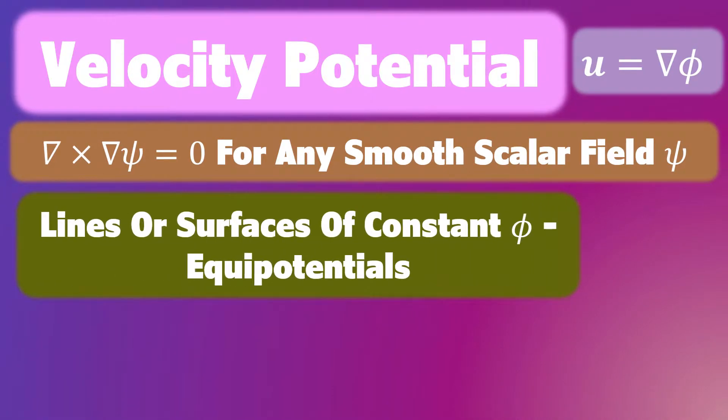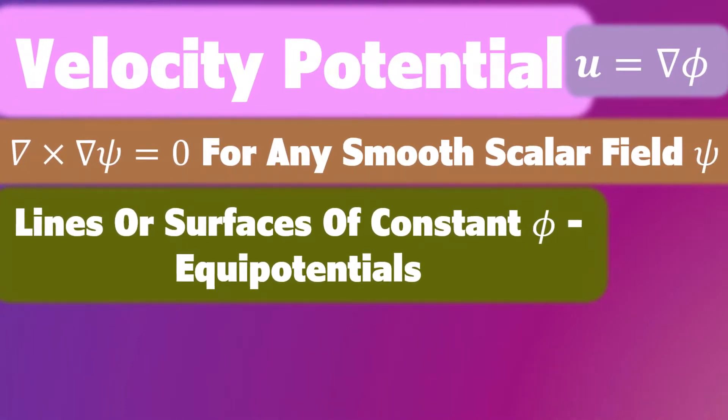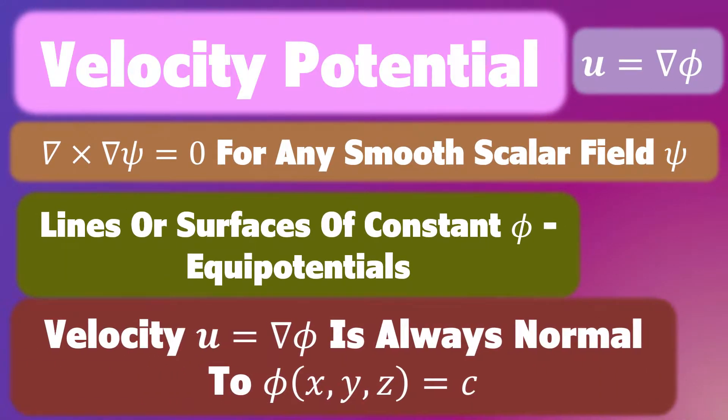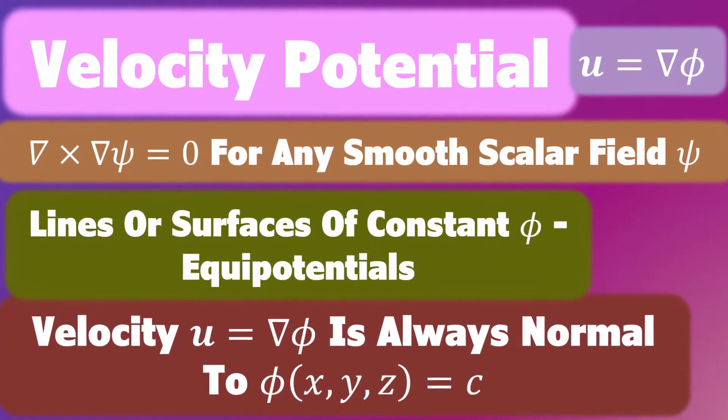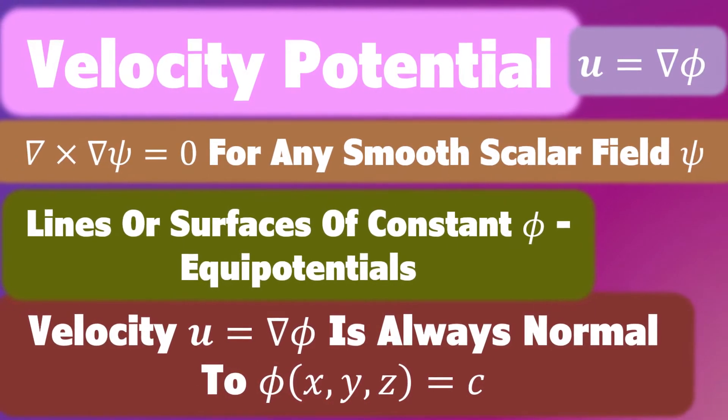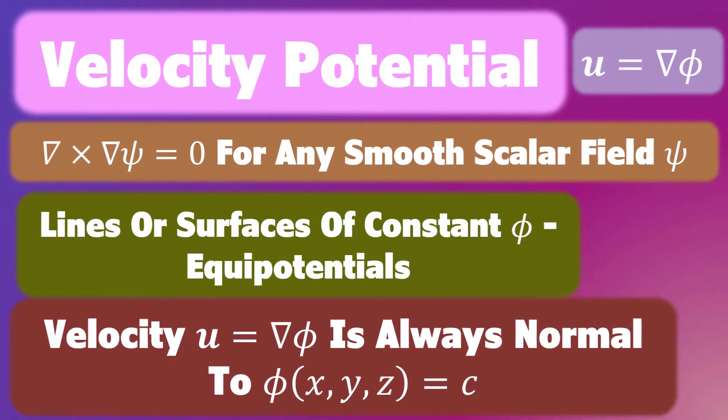Lines or surfaces of constant phi are called equipotentials. The velocity U equals grad phi is always normal to these surfaces, where phi of x, y, z equals c, where c is a constant.